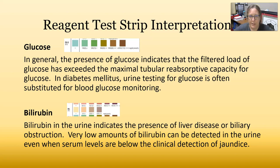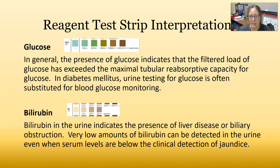For glucose: the presence of glucose in urine indicates that the filtered load of glucose has exceeded the maximal tubular reabsorption capacity. Meaning the glucose in the plasma is above the threshold of what can be reclaimed back into the plasma, so some spills over into the urine. In diabetes mellitus, urine testing for glucose is often substituted for blood glucose monitoring — the more glucose that ends up in the urine, the less controlled the diabetes is.